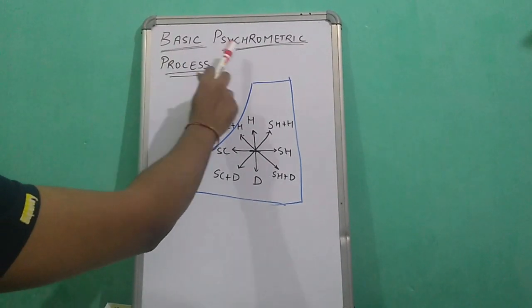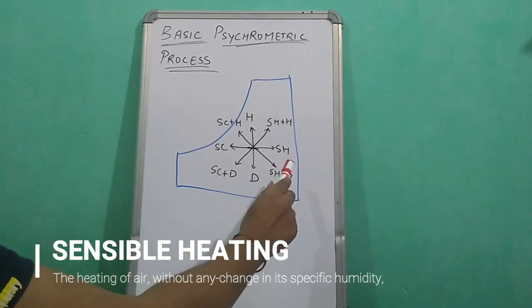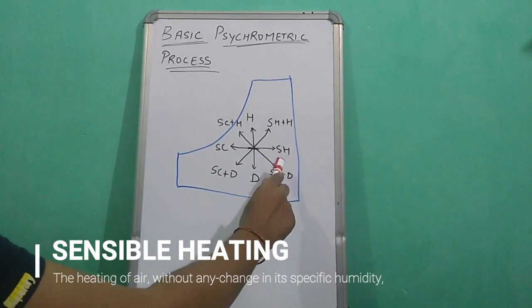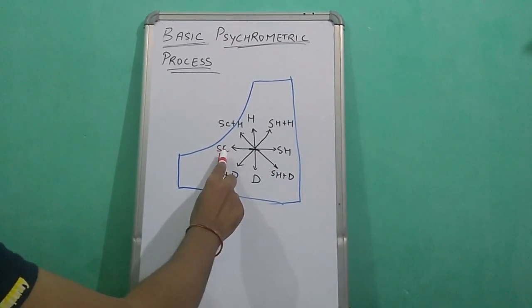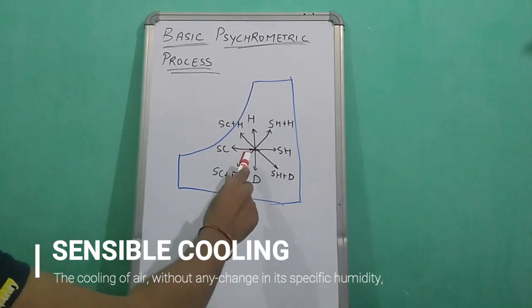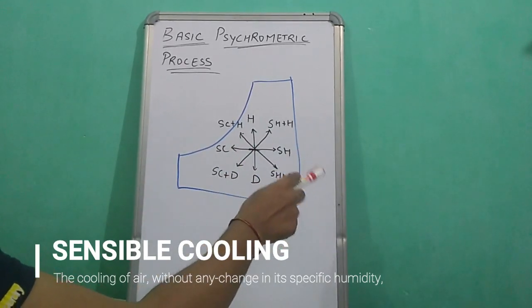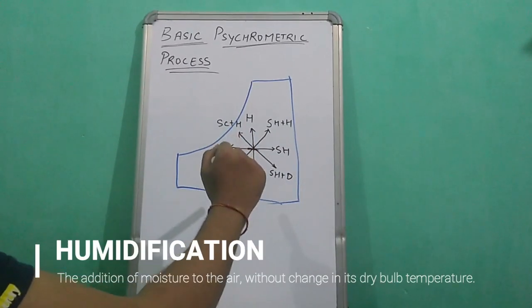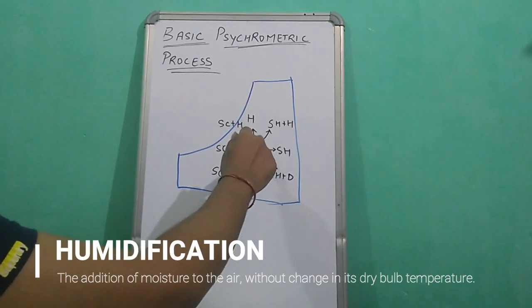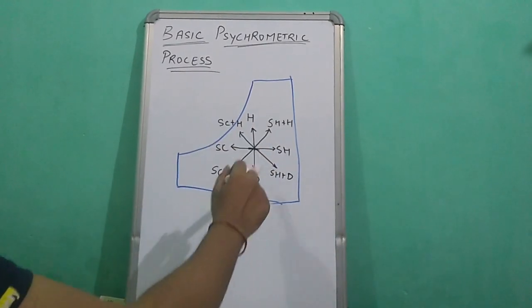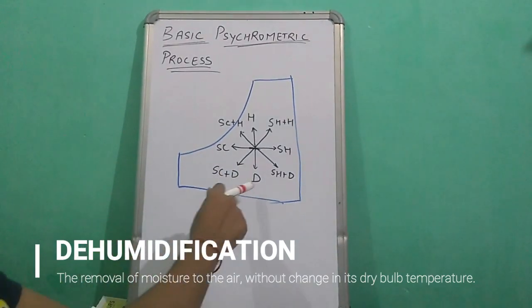Let's discuss basic psychrometric processes. First, sensible heating: it is a process of increasing dry bulb temperature at constant specific humidity. Similarly, sensible cooling is a process of decreasing dry bulb temperature at constant specific humidity. Humidification is a process of increasing specific humidity at constant dry bulb temperature. Dehumidification is a process of decreasing specific humidity at constant dry bulb temperature.